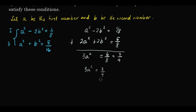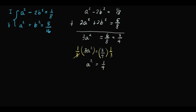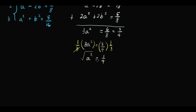To solve 3a squared equals 3 over 4, we multiply everything by 1 third, which cancels the 3. We're left with a squared equals 1 over 4. Taking the square root of both sides gives a equals plus or minus 1 half.